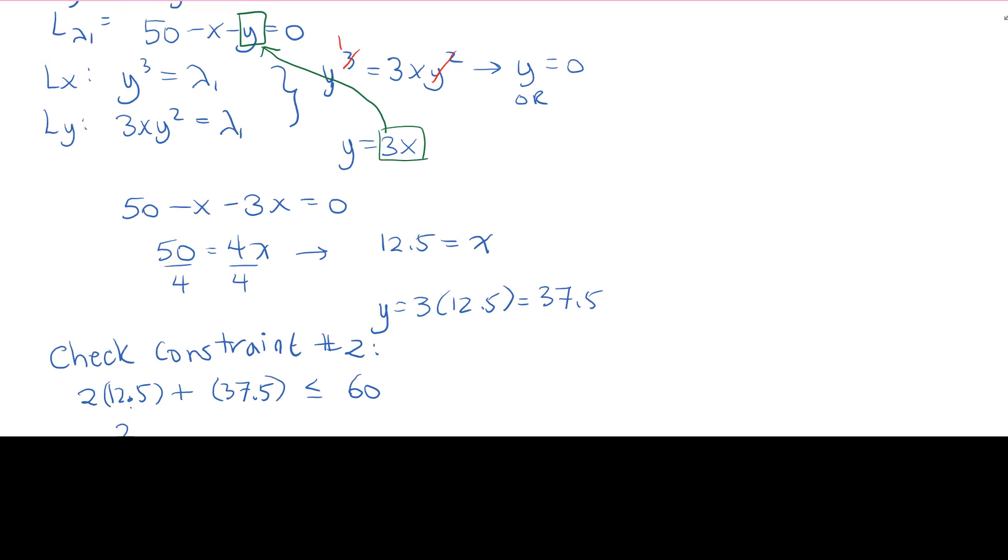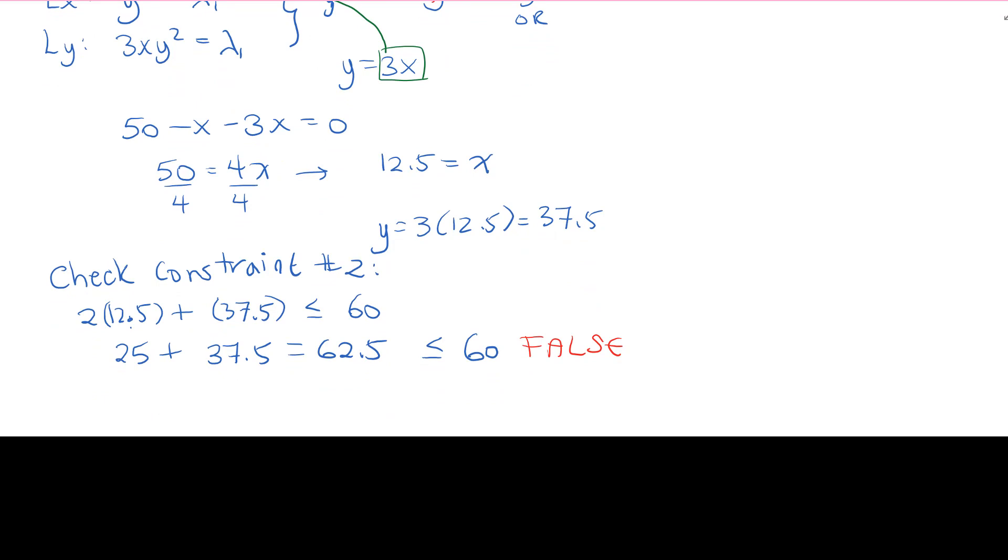So this gives us 25 plus 37.5, which gives us 62.5. Is that less than or equal to our allowable 60? No, it is not. So constraint number 2 is not satisfied, so we need to move on to step number 2.